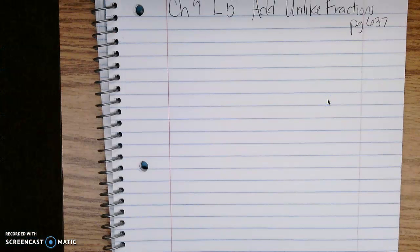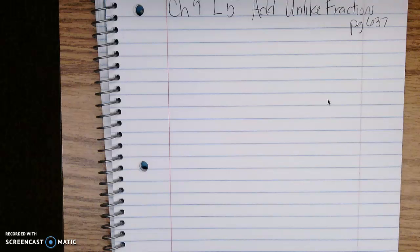Good morning mathematicians, today we are going to be doing Chapter 9 Lesson 5: Add Unlike Fractions. This is from page 637 in your math book.